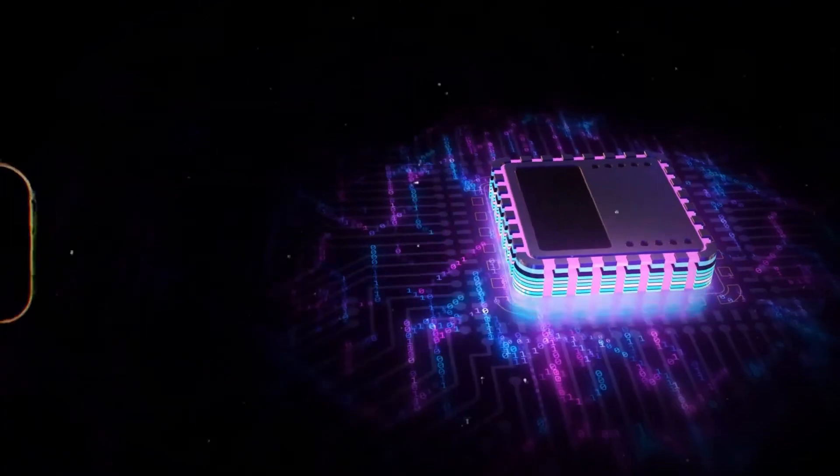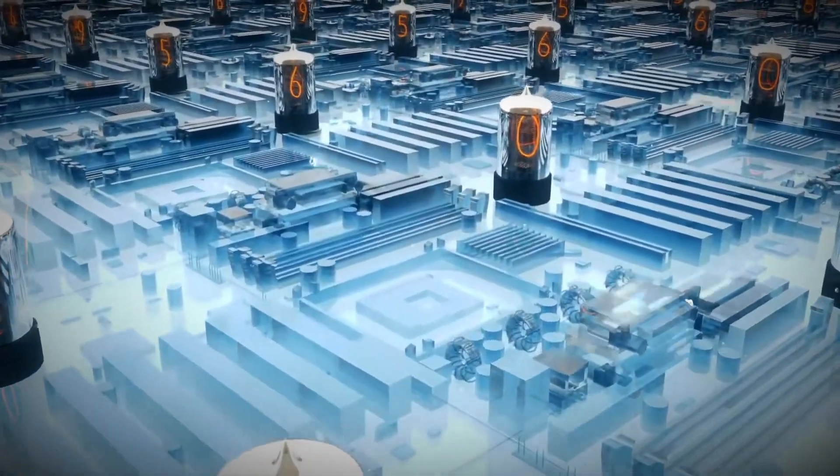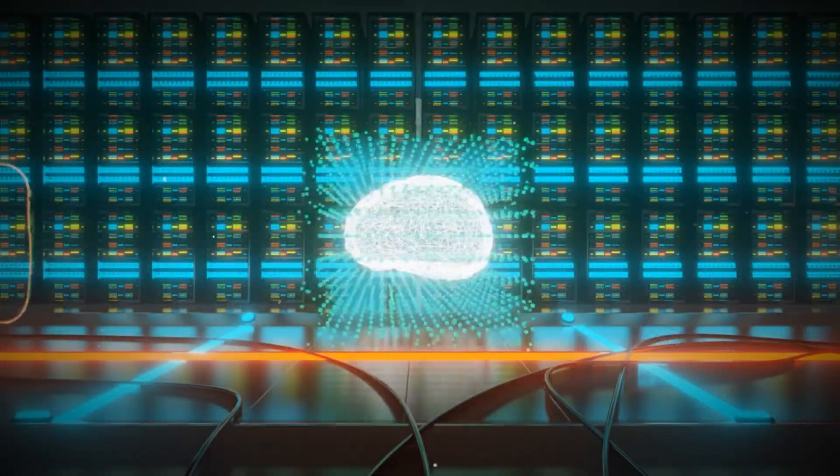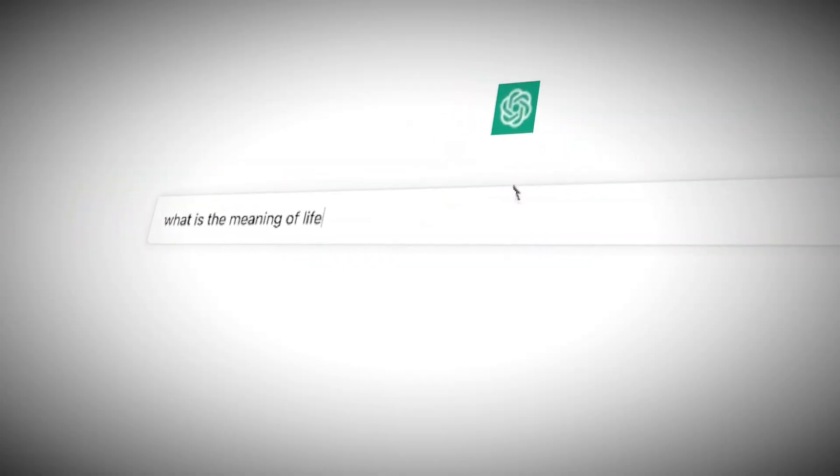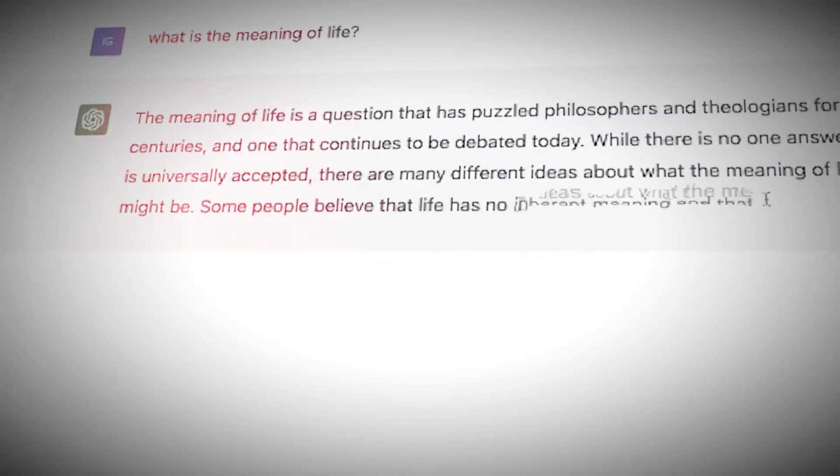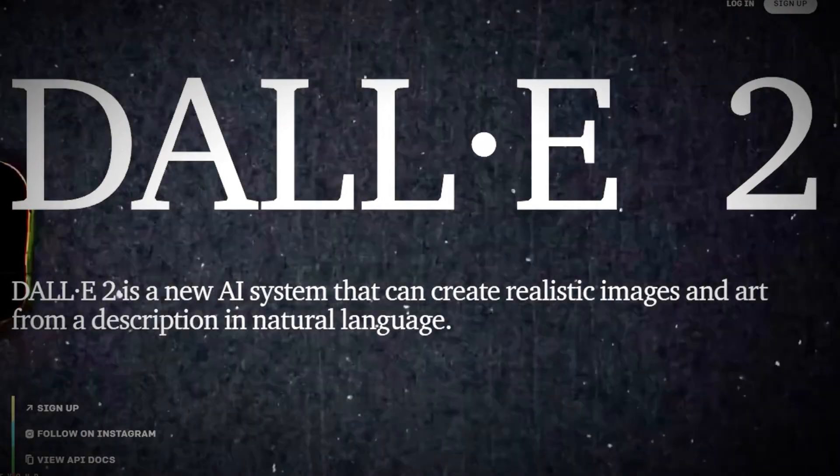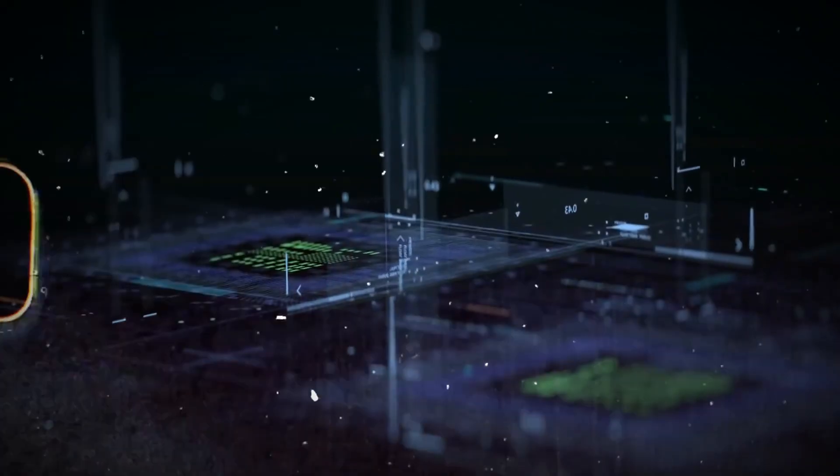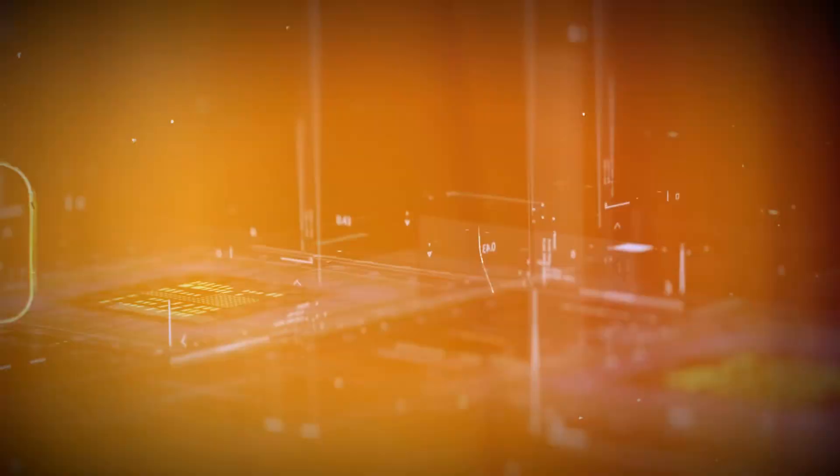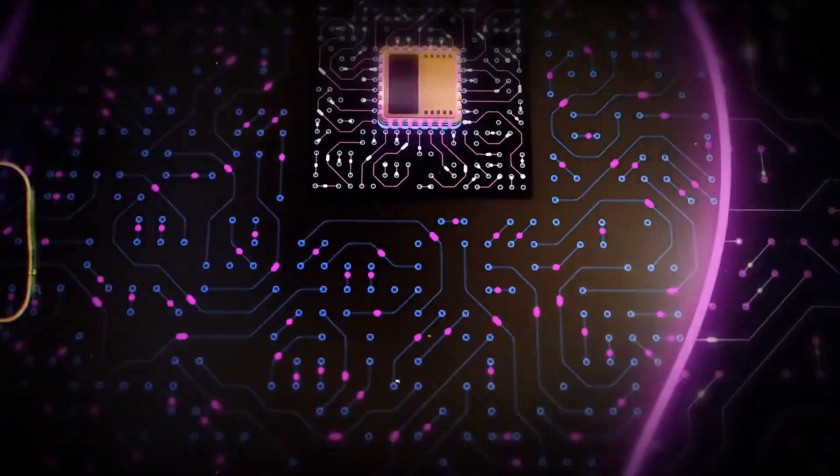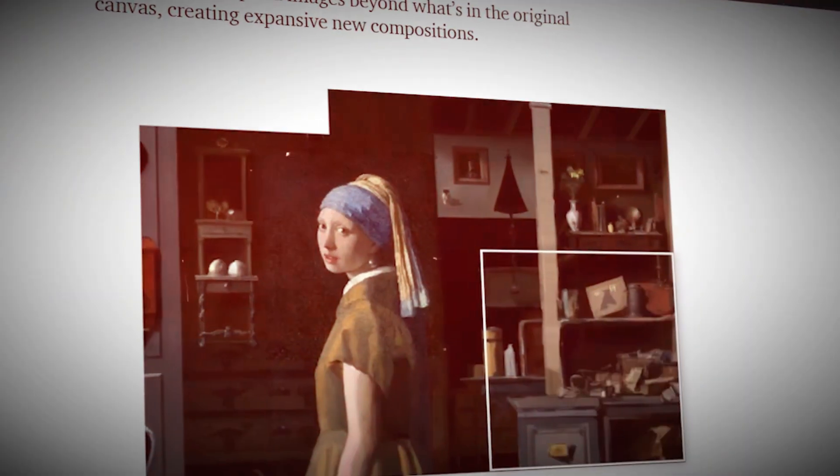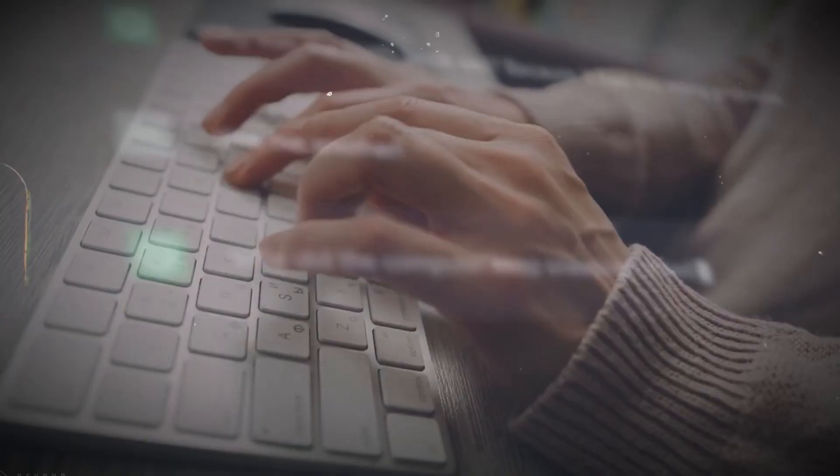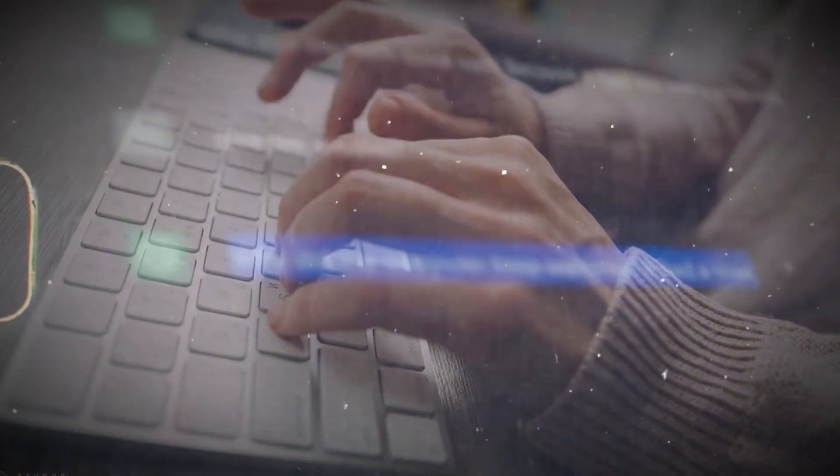The revelation about the current chips and hardware not being specifically designed for AI applications underscores the evolving nature of technology. This insight prompts anticipation for advancements in hardware that could complement the rapid progress in AI models to the evolving landscape of AI. The potential breakthrough in chip design, if successful, could significantly accelerate training runs, transforming the field of AI. While this might sound like a dream, the implications of such advancements could be profound, impacting the speed and efficiency of AI models.